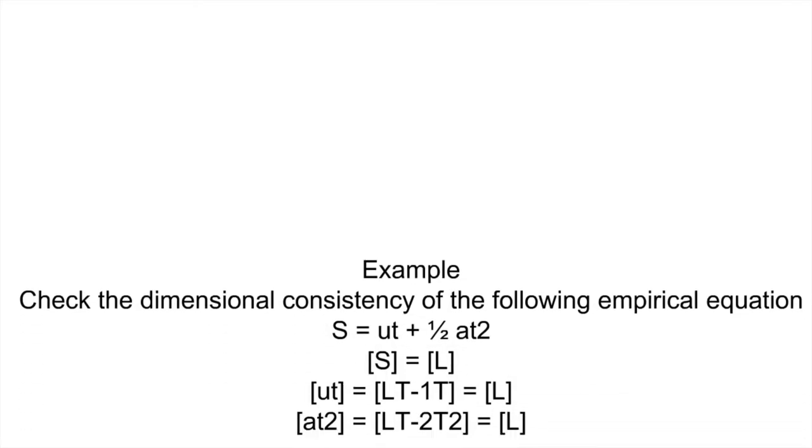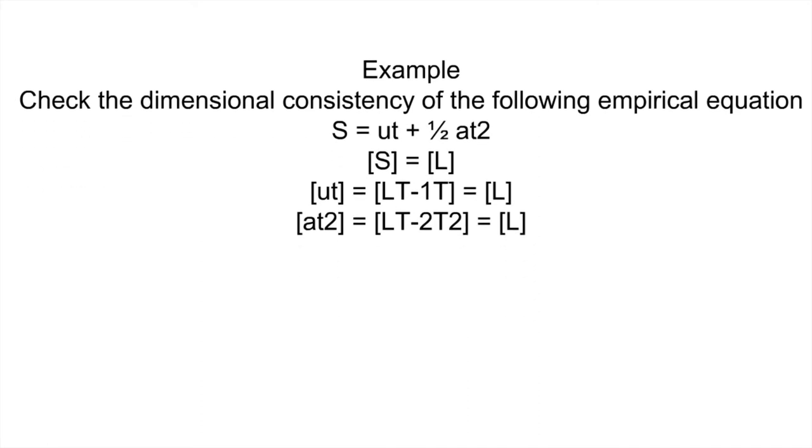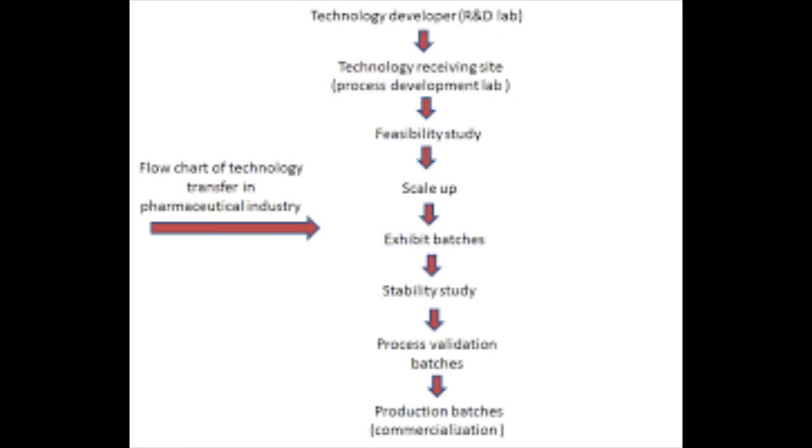We will finish this video with a simple problem followed by an application example. Check the dimensional consistency of the following empirical equation: s = ut + (1/2)at². The dimension of s is length [L]. u is [L·T^(-1)] and t is [T], so multiplying gives [L]. And a is [L·T^(-2)], multiplied by t² gives [L]. Hence, it is a dimensionally homogeneous equation.